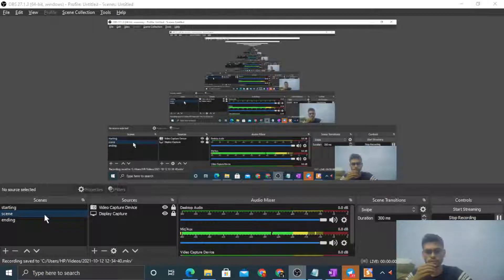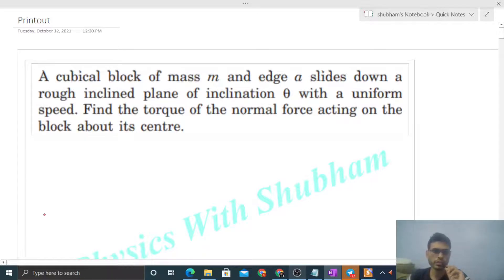Okay hi everyone, today let's discuss this interesting problem. It says a cubical block of mass m and edge a slides down a rough inclined plane of inclination theta with uniform speed. Find the torque of the normal force acting on the block about its center.